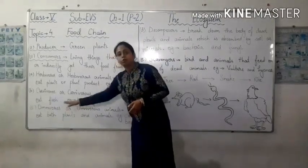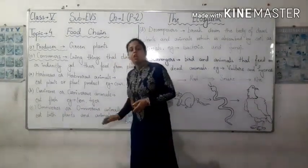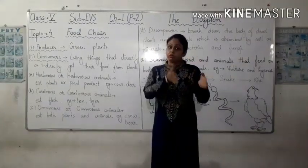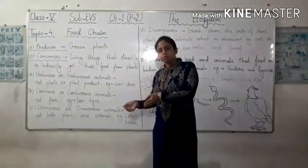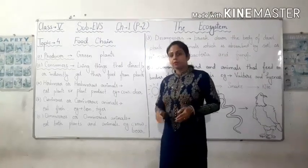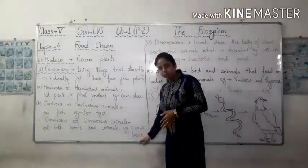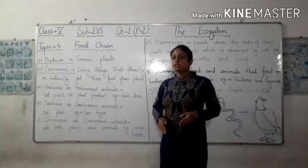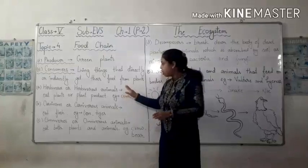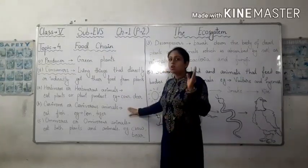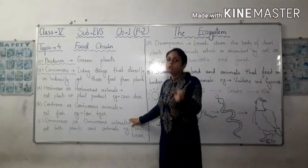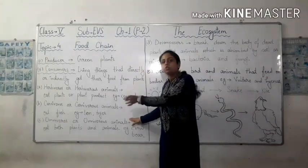Now, we have omnivores, or omnivorous animals. These animals eat both plants and animals. Examples include crow, bear, etc. So, to summarize: herbivores eat only plants, carnivores eat only flesh, and omnivores eat both plants and flesh.